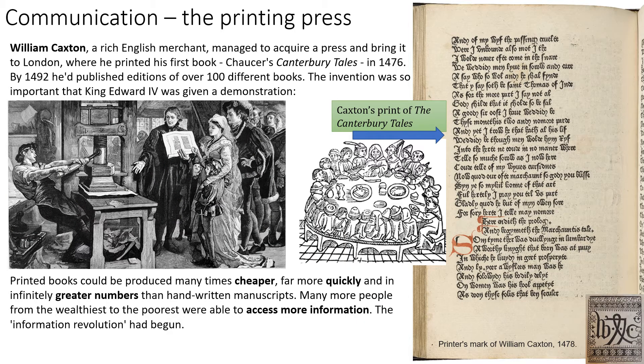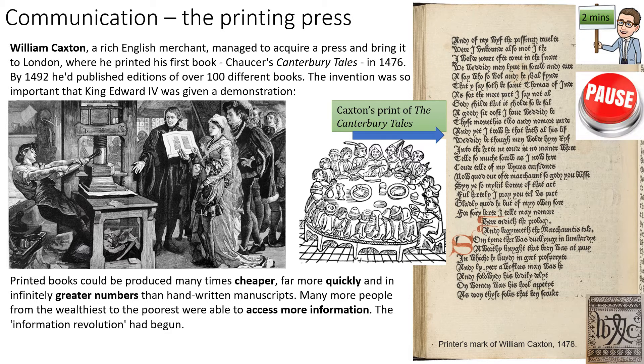After Johannes Gutenberg creates the printing press in Germany, William Caxton — who is a businessman — decides he's going to take the idea. He takes his version of the printing press back to England and sets himself up as the guy who creates the English printing press. It was so important that King Edward IV was even given a demonstration — that's the image here. William Caxton creates the first printed versions of some of our most famous works, such as The Canterbury Tales. A few minutes — write notes. We've got an individual who creates the change, we've got the change itself, and we've got a bit of the impact. Pause the video here.